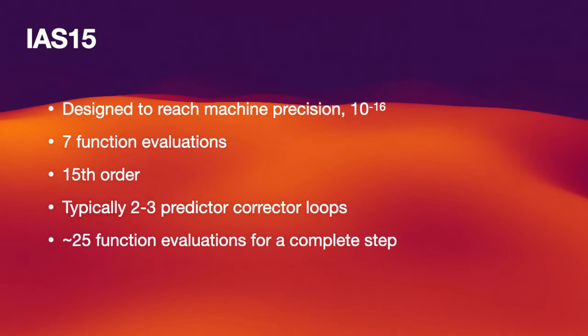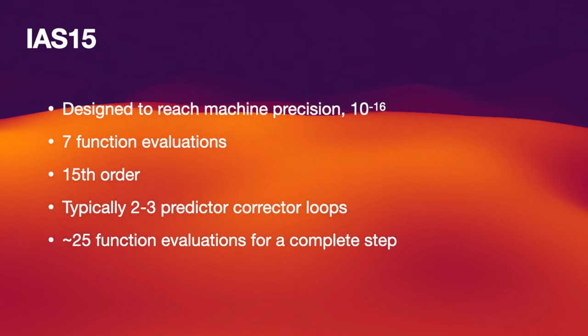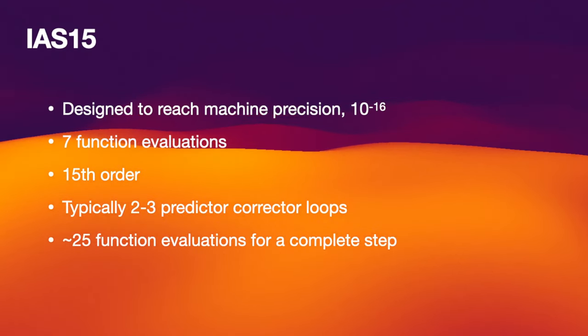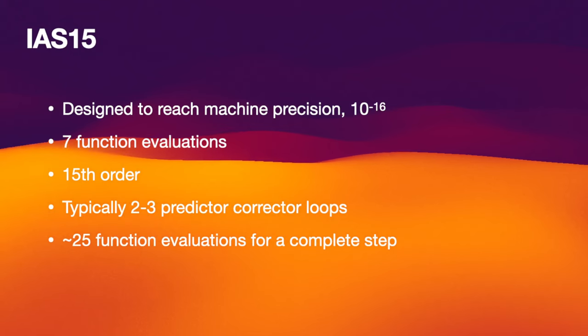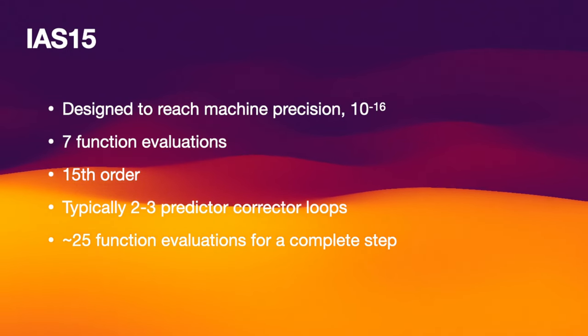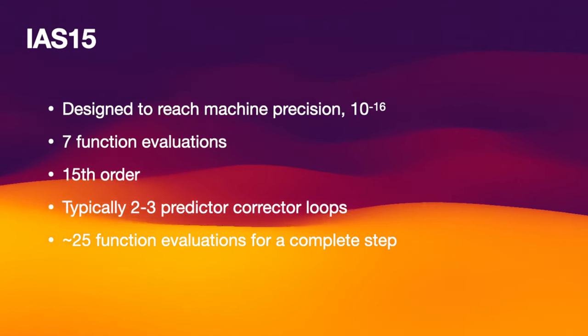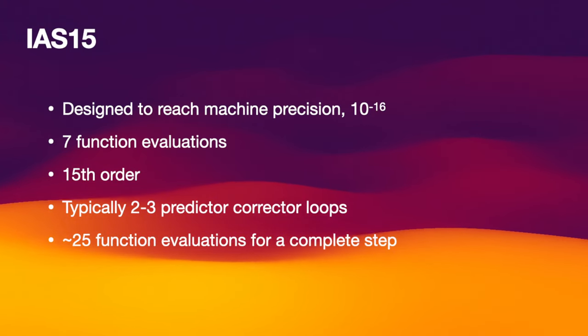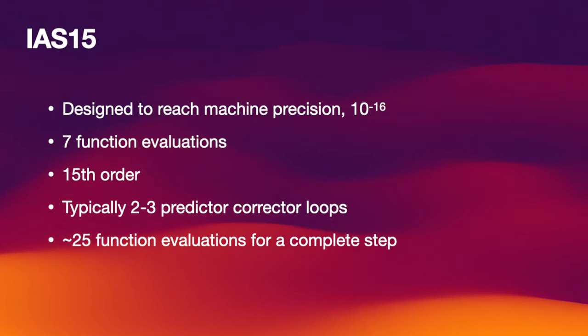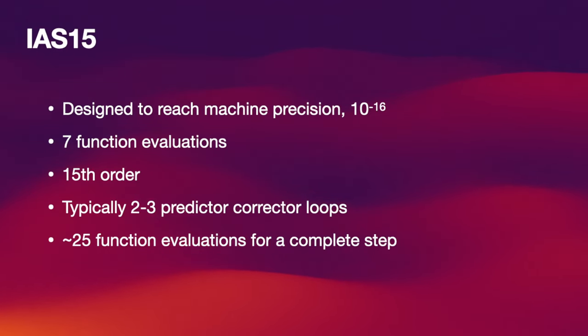Because it's 25, it is going to be slower per time step than some other schemes. For example, Leapfrog or Wisdom-Holman need one function evaluation per time step. So IAS15 will be at least 25 times slower than Leapfrog for the same time step. However, IAS15 is going to be much more accurate using the same time step. So if you wanted to have the same accuracy with a Leapfrog integrator, you would need to reduce the time step significantly. And in the end, you would find that IAS15 is faster for the same accuracy.